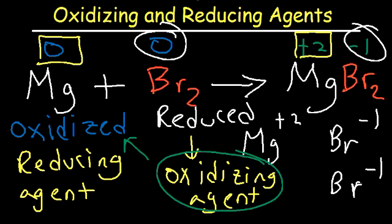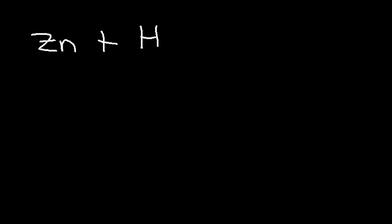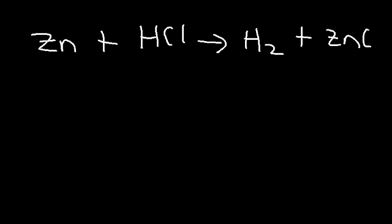Let's try another example. Zinc metal reacts with hydrochloric acid to produce hydrogen gas and zinc chloride. Pause the video and try this practice problem yourself, then unpause to check your answer. What is the oxidation state of zinc? For any pure metal in its natural state — a pure element — it's 0.